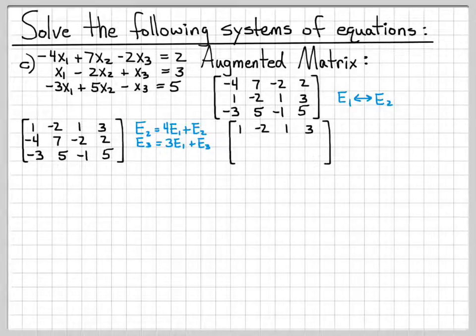So if I do that, the first equation is unchanged. Equation 2 turns into 0, negative 1, 2, and 14. And the third equation turns into 0, negative 1, 2, and 14.